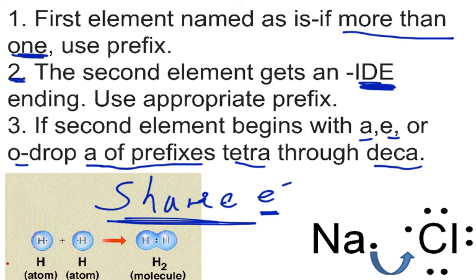They actually share electrons to be more stable. We have two hydrogens right here. They will actually share each of their electrons in their valence shell, their only electron, to become a more stable H2 molecule. We'll talk about that later on in class.